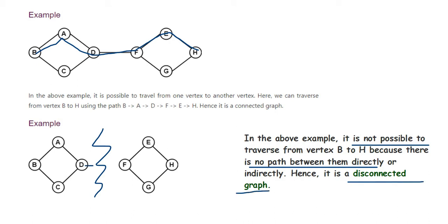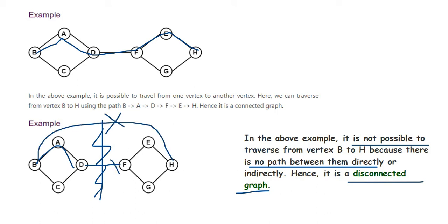In simple terms, this is a disconnected graph because it does not have any connectivity from D and F — there is no connection. We cannot traverse from B to H; if we traverse B to D it goes B, A, D, but there is no option to traverse from B to H.